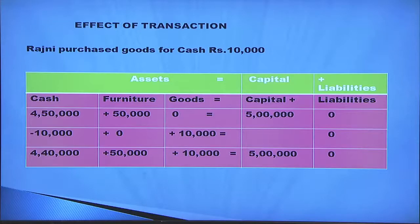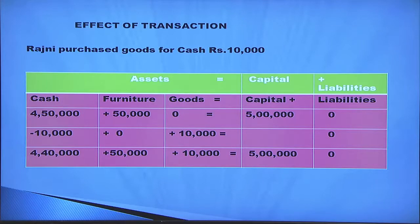Rajni purchased goods for cash rupees 10,000. Goods are included under assets; cash is going, so minus 10,000 in the cash column and plus 10,000 in the goods column. The new accounting equation is cash four lakh 40,000 plus furniture 50,000 plus goods 10,000, totalling five lakh on the asset side, equals capital five lakh on the liabilities side. Here also the accounting equation is satisfied.